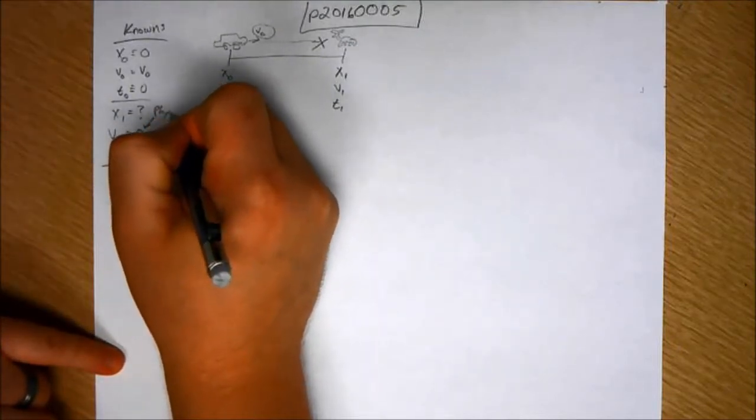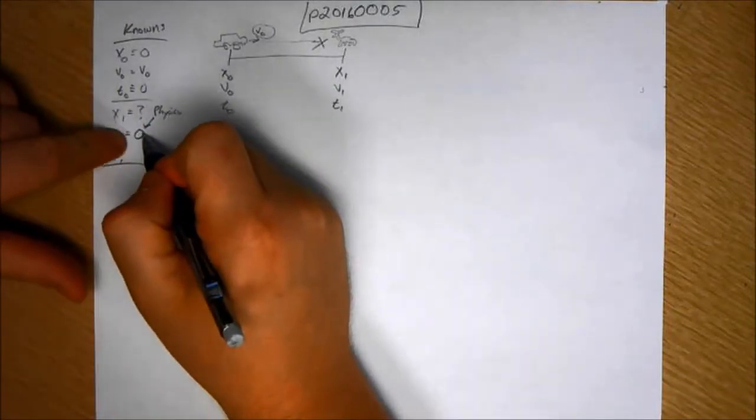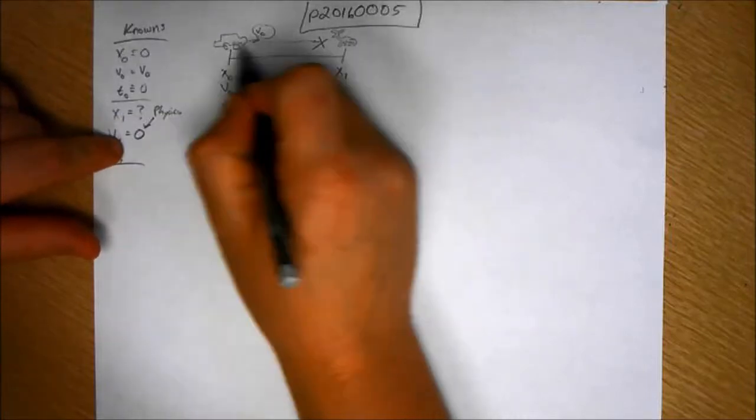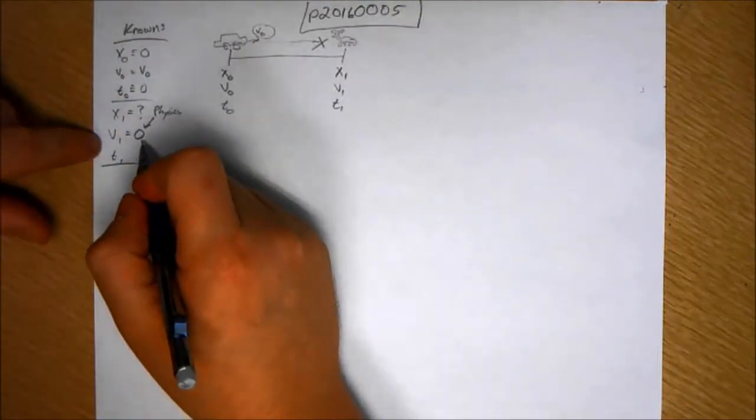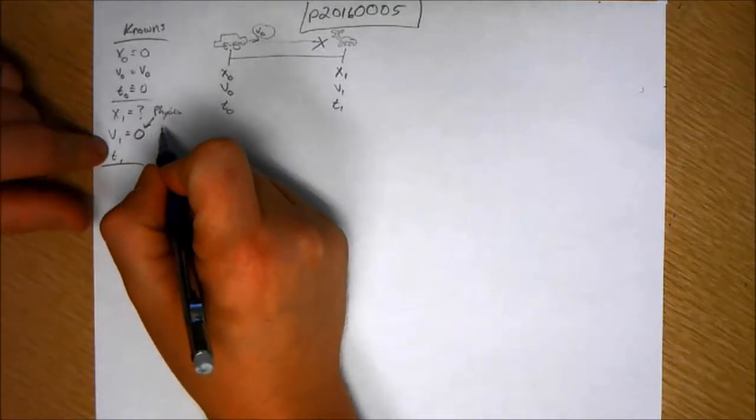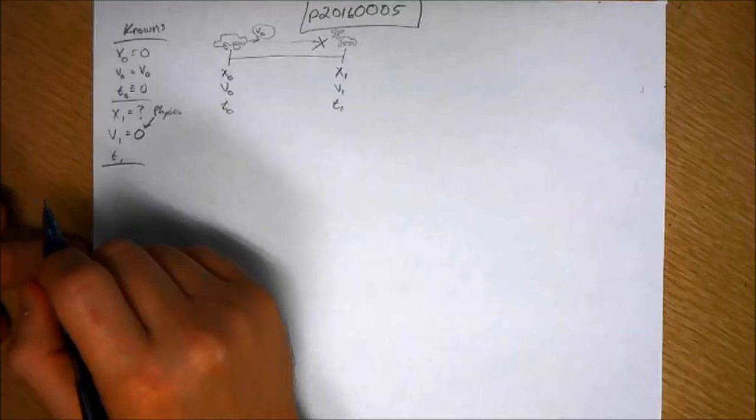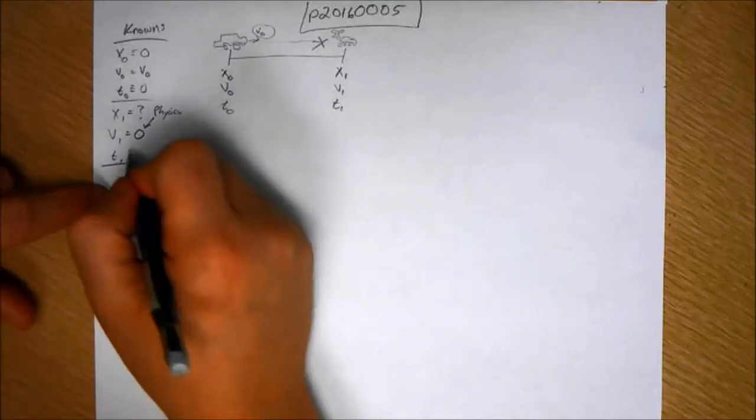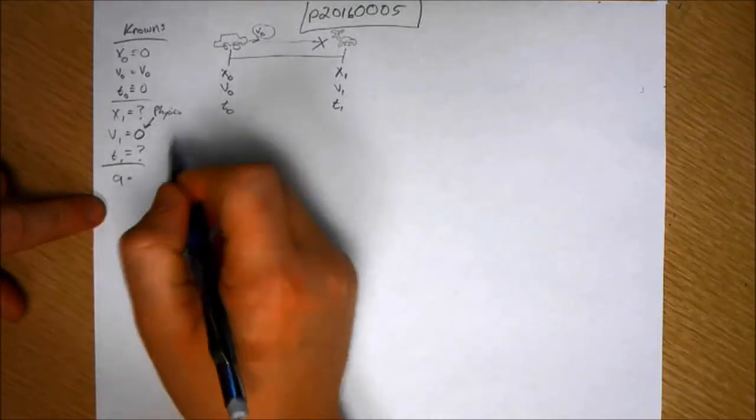This is physics. So where does math end and physics begins? Right here, because you know from the physical situation that the car has to stop before it hits the moose. That's what the prompt is asking for. So this is not something that's derived or calculated. This we know just from the physics of the situation. And the time, we don't know.